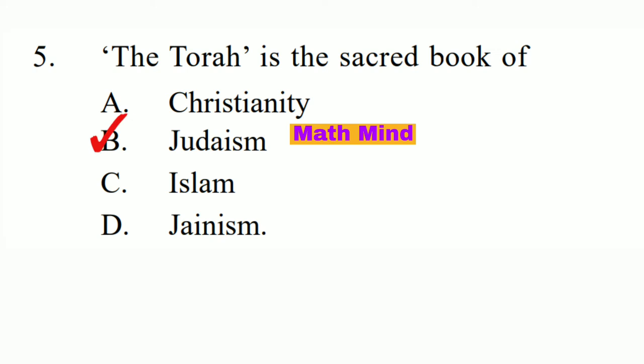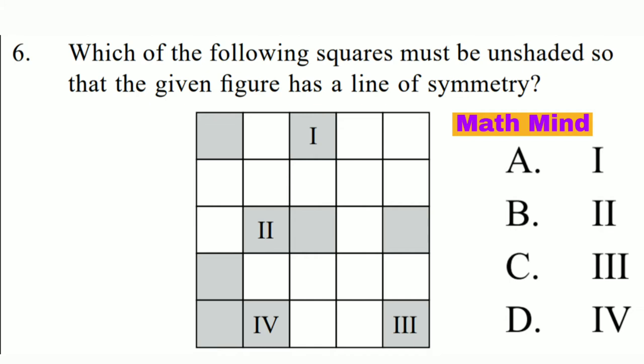Question No. 6. Which of the following squares must be shaded so that the given figure has a line of symmetry? Option B is correct: 2. This is the line of symmetry.